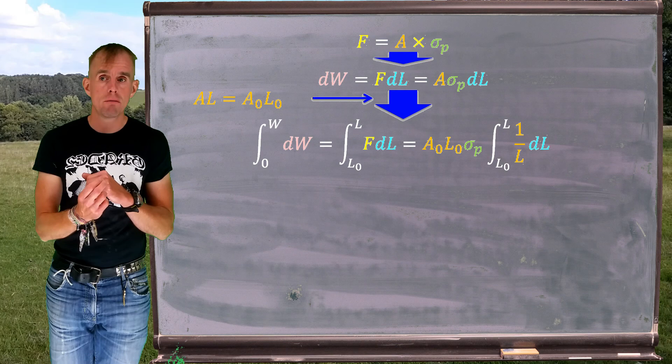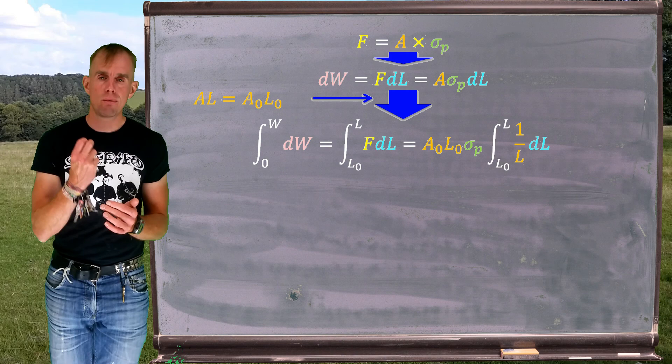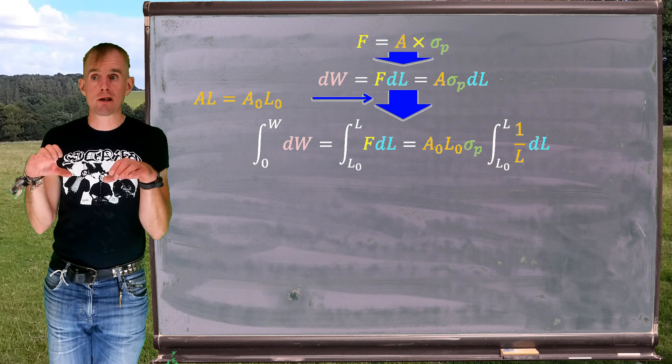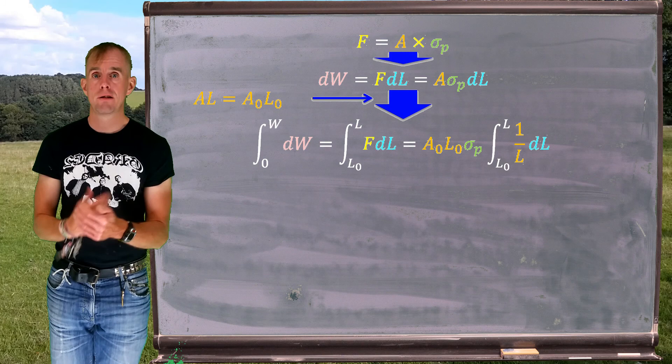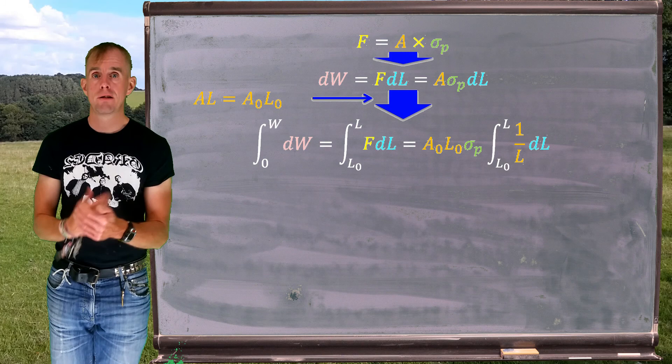This is an assumption and depending on the structure of the material may not be true. Have a look at the Poisson's ratio to decide whether it is or isn't true. If we assume that it is true, the area times the length at any point of deformation is constant. So the initial area A0 times initial length L0 is a volume which of course is simply the area times the length at any point in the deformation.